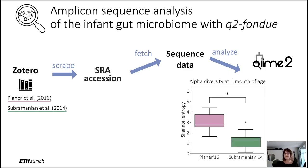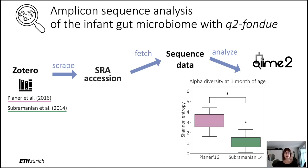With these accession IDs, we could then fetch the sequence data of these studies and further analyze it, for example in QIIME2. This analysis might yield a final result like this, where we'd see the differences in the diversity metrics of the two studies. The main characteristic of using Q2Fondue for this analysis is that it captures each download and analysis step in provenance, so each step is saved together with the output in the output file.